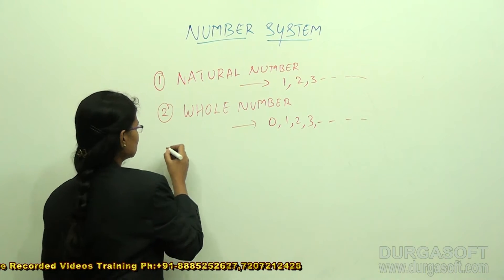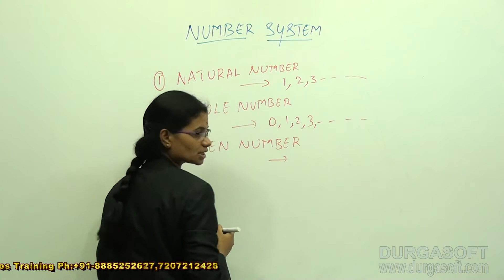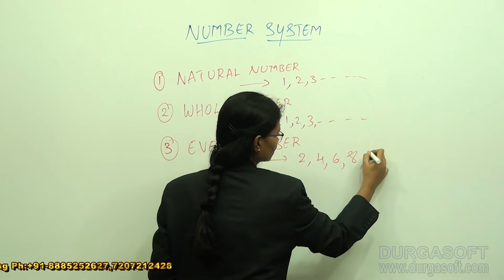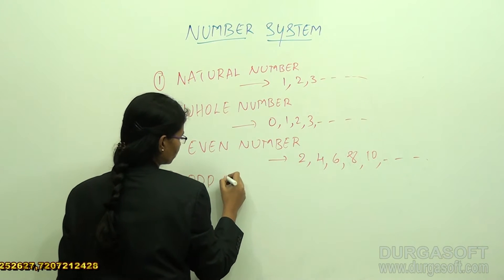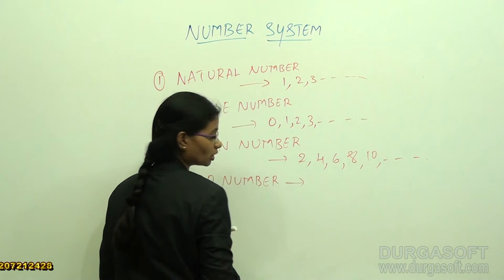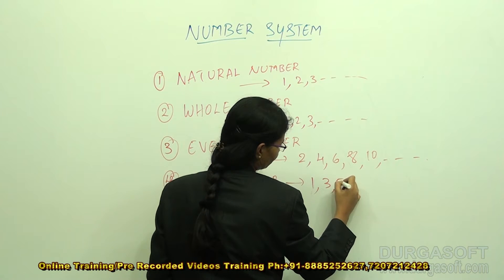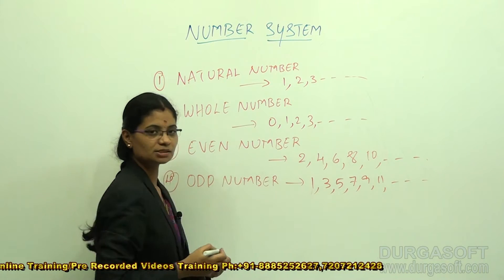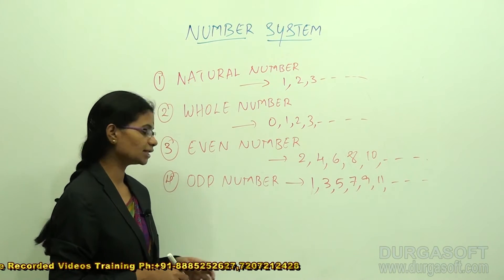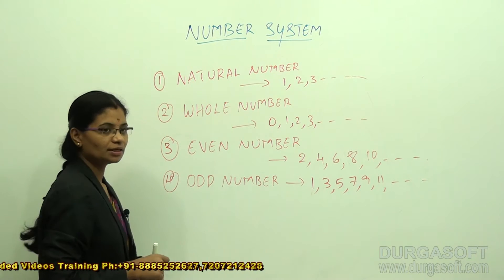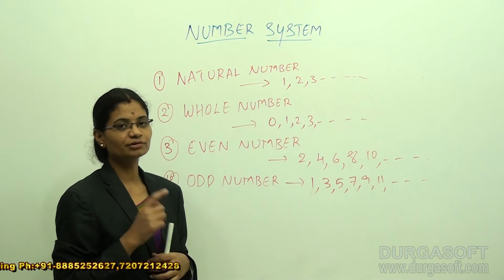Even numbers are 2, 4, 6, 8, 10, and so on. Odd numbers start from 1 — 1, 3, 5, 7, 9, 11, and so on. The numbers which are divisible by 2 are called even numbers, and the numbers which are not divisible by 2 are odd numbers. Note that 0 is neither an even number nor an odd number.